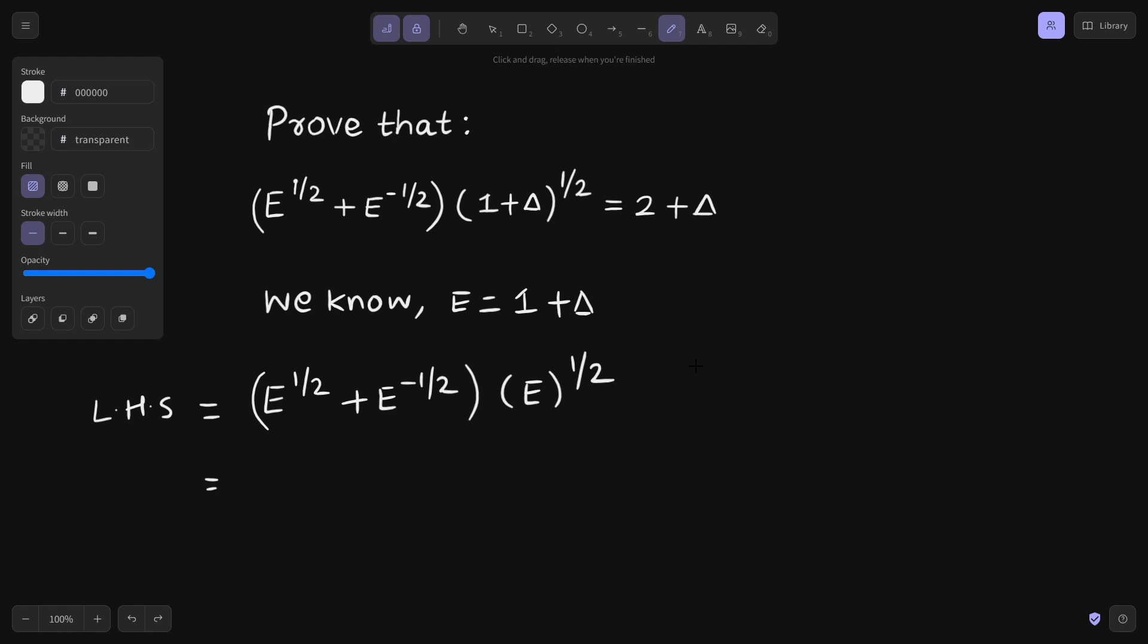So if we multiply it inside, we get E^(1/2) multiplied by E^(1/2). So that will be E^(1/2 + 1/2) plus E^(-1/2) multiplied by E^(1/2), so E^(-1/2 + 1/2).